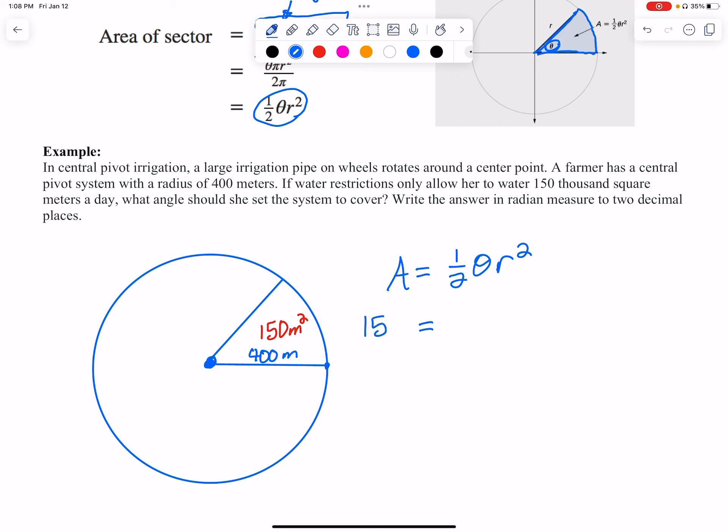We know the area has to be 150, and then we got ½, I don't know theta, but I know r, which is 400 squared. If I multiply all that using my calculator, I get 8,000 times theta.